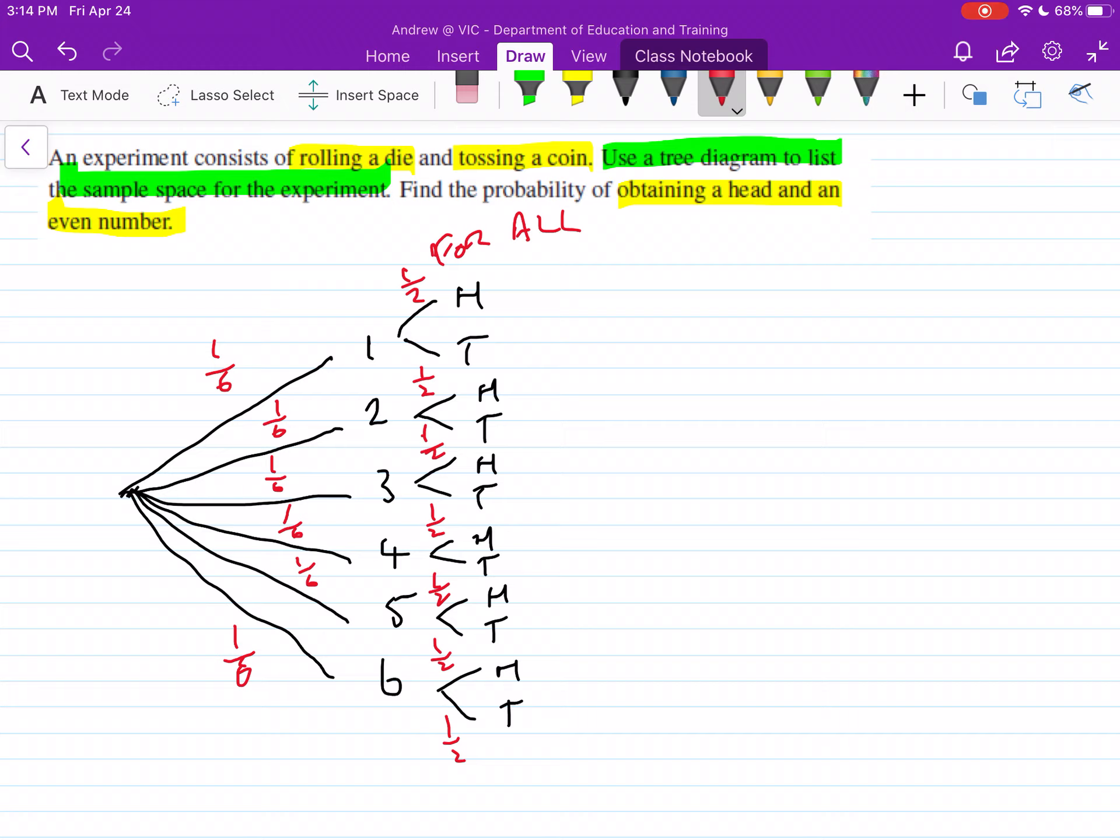So here, we just need to work out our probabilities. So conditional probabilities, one thing happening after another. So first, we'll just focus on what it has for our question. So find the probability of obtaining a head and an even number. So we need to look at all our heads at the even numbers here. So all our H values, we're going to work out these.